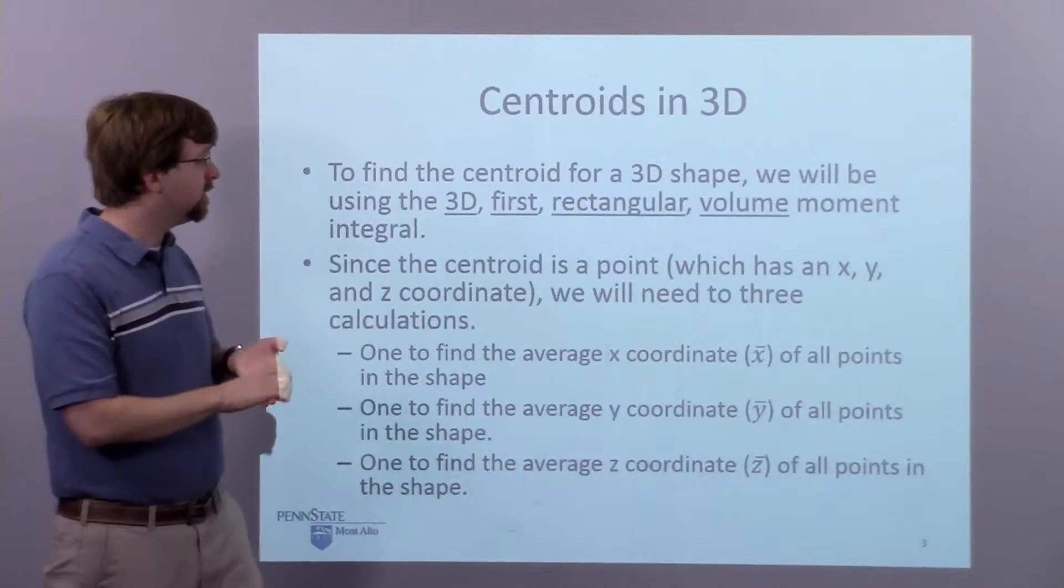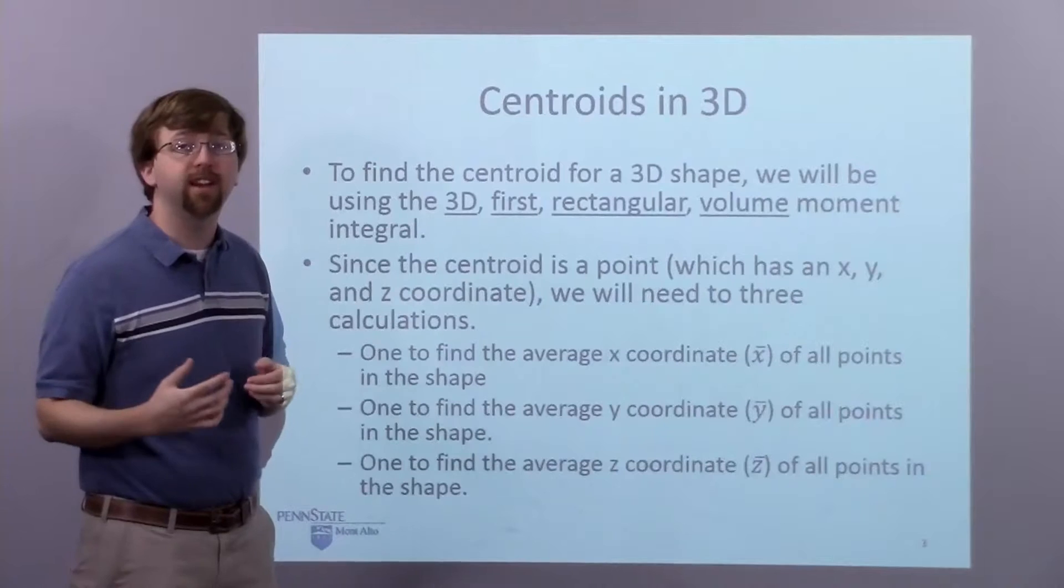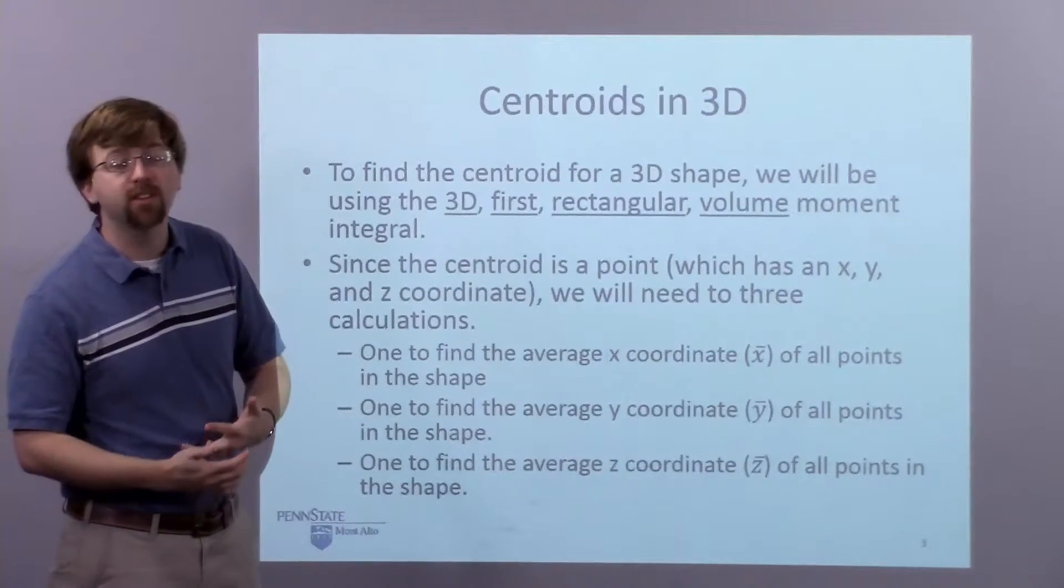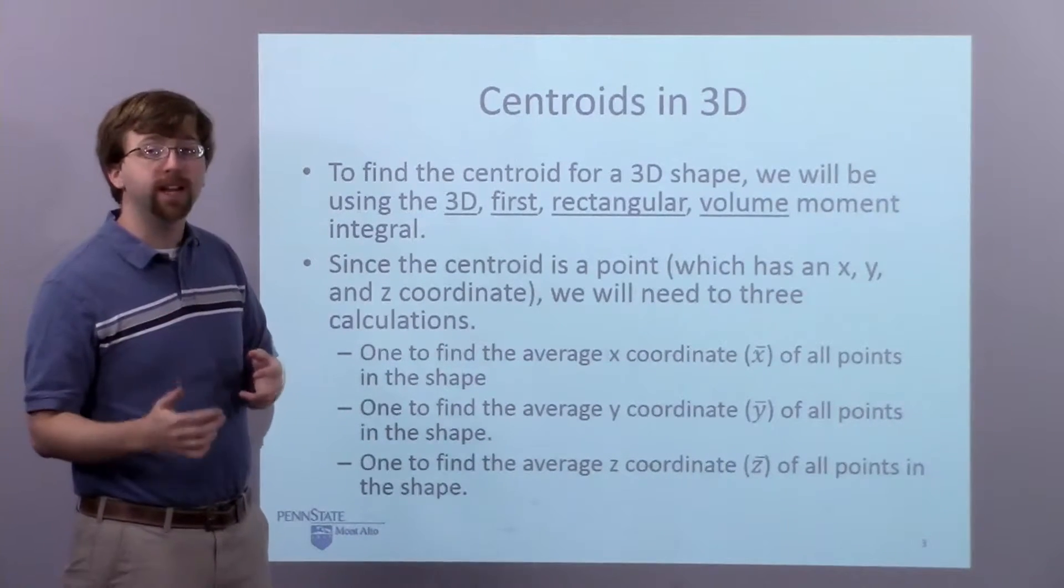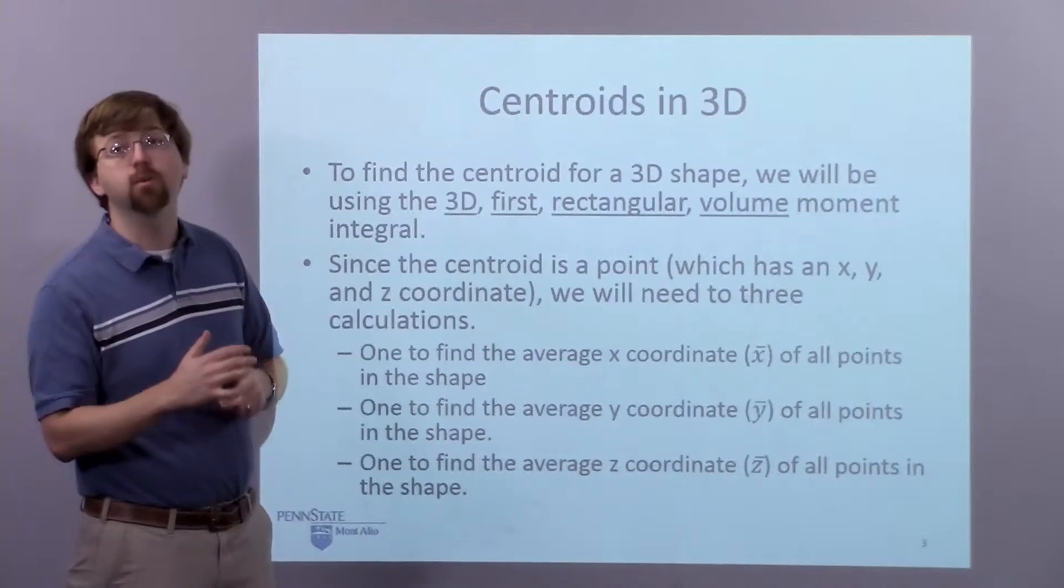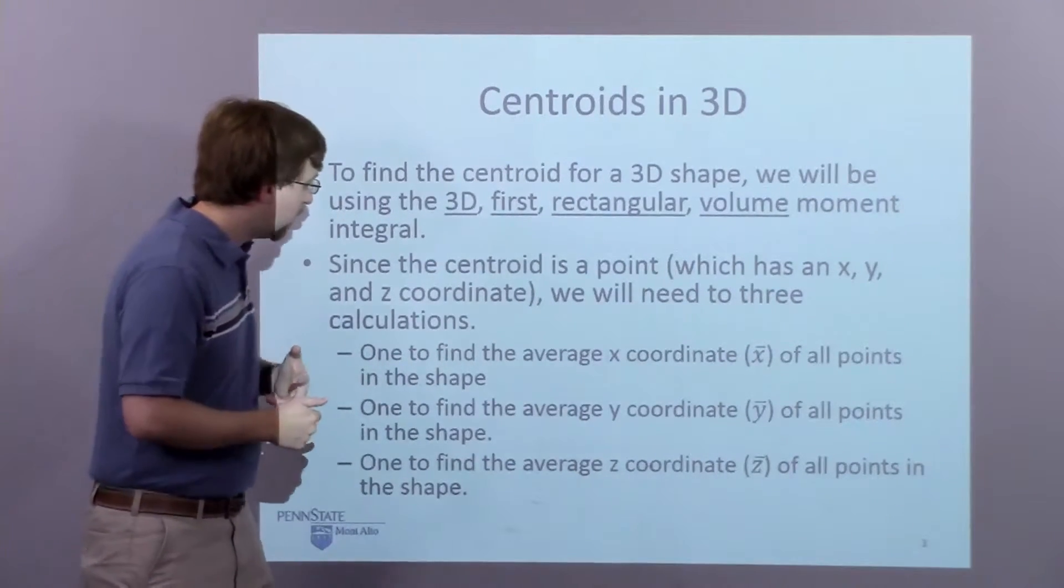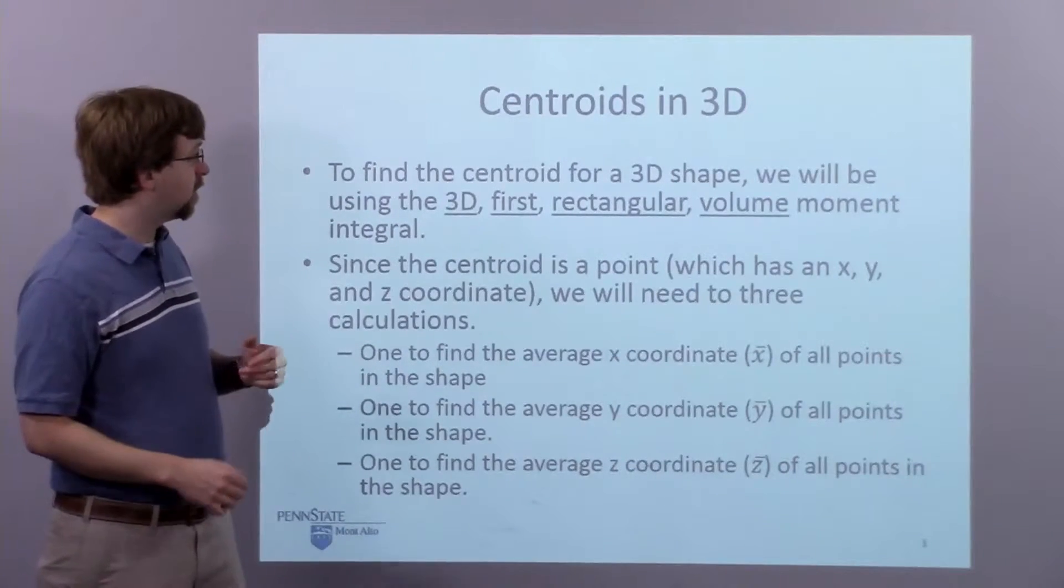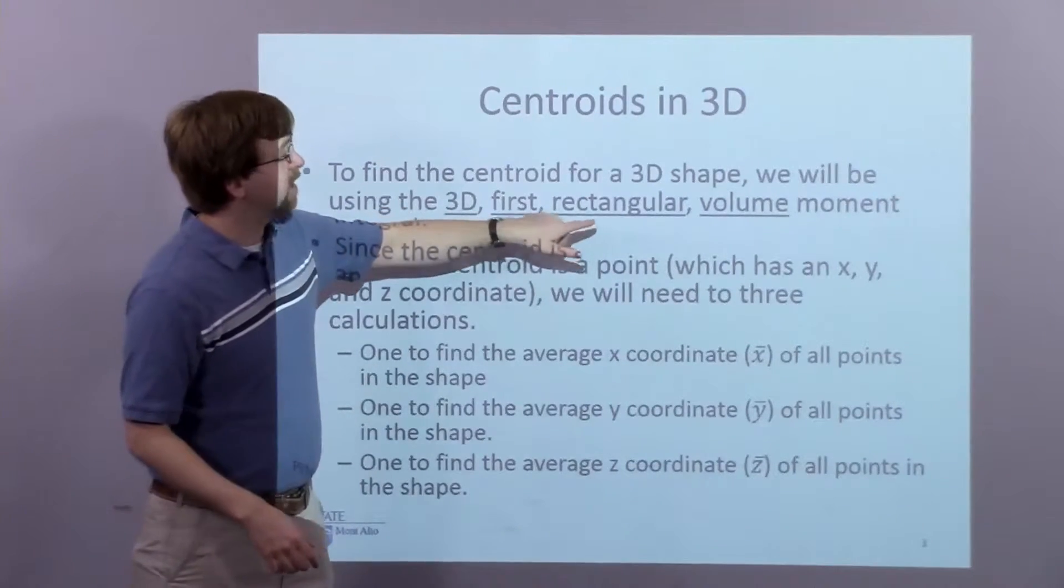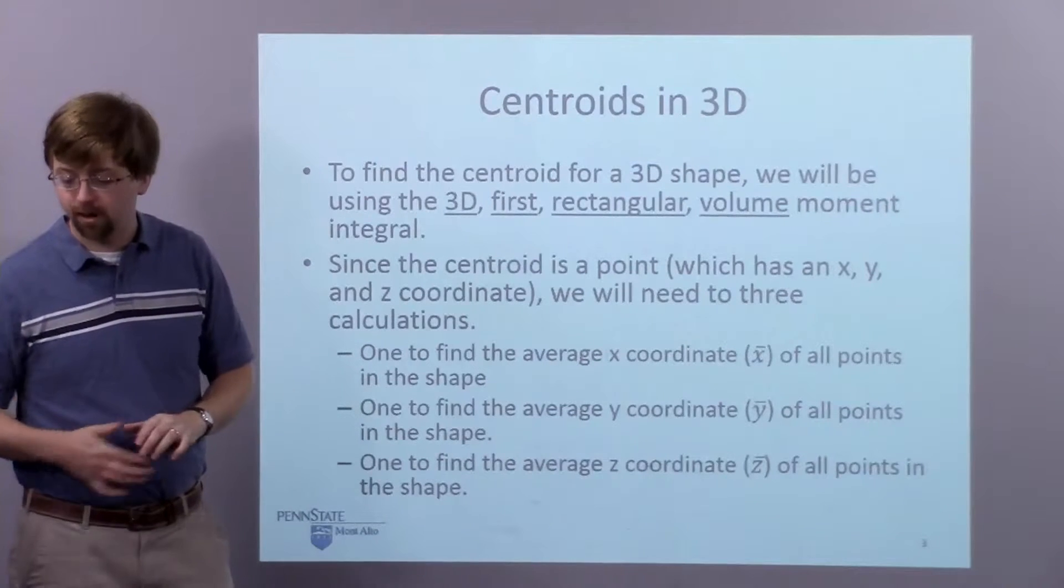Since the centroid is a point, and in 3D it's going to have x, y, and z coordinates, we're going to need to do three calculations. One to find the x coordinate, one to find the y coordinate, and one to find the z coordinate. So each one of these is going to involve this 3D first rectangular volume moment integral calculation.